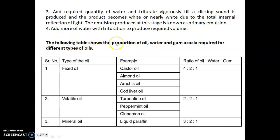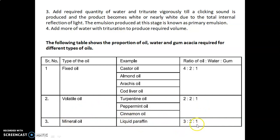The proportion of oil, water, and gum acacia for different types of oils: fixed oils (e.g., castor oil, almond oil, arachis oil, cod liver oil) — ratio 4:2:1. Volatile oils (e.g., turpentine oil, peppermint oil, cinnamon oil) — ratio 2:2:1. Mineral oil or liquid paraffin — ratio 3:2:1.